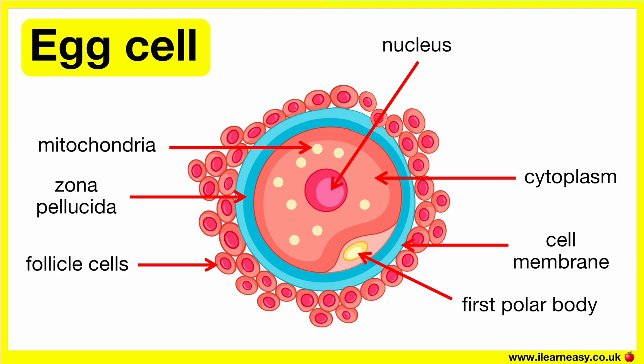The zona pellucida in the egg cell protects the egg, facilitates sperm binding during fertilisation, and blocks the entry of multiple sperm. The follicle cells surrounding the egg cell provide nutritional support, secrete hormones, and help to regulate the maturation and release of the egg during ovulation. The first polar body is a by-product of meiosis, which contains excess genetic material and is discarded to ensure the egg has the correct chromosome number for fertilisation.